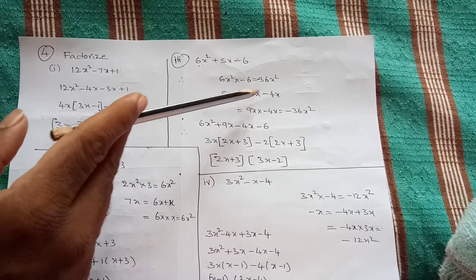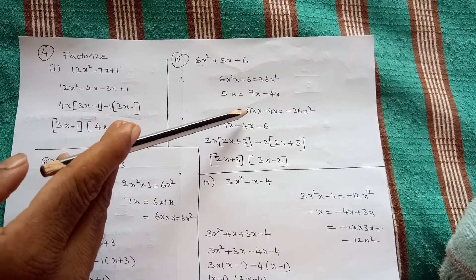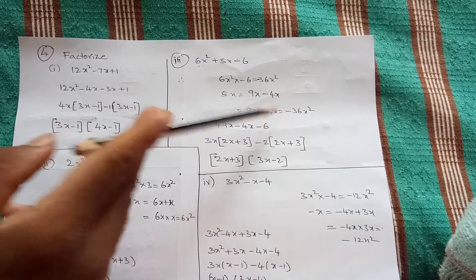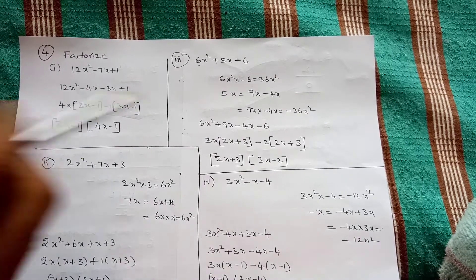Multiply 9x minus 4x: on addition it is 5x, but 9x times minus 4x that is minus 36x square.